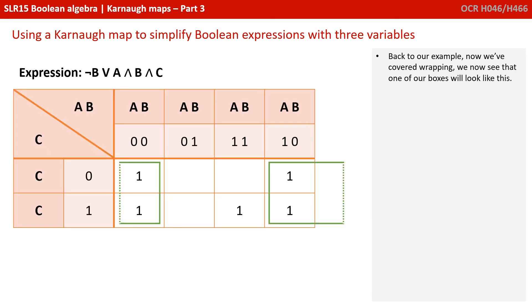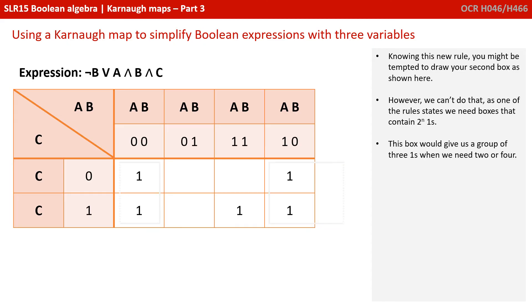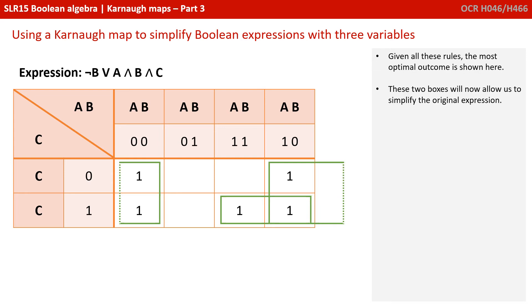So back to our example. Now we've covered wrapping, we can now see that one of our boxes will look like this. It's a box of four, a square. Now, knowing this new rule, you might be tempted to draw your second box as shown here. However, we can't do that. As one of the rules states, we need boxes that contain 2 to the n ones. And this box gives us a group of three ones. We need two or four. Given all these rules, the most optimal outcome is shown here. These two boxes will now allow us to simplify the original expression.